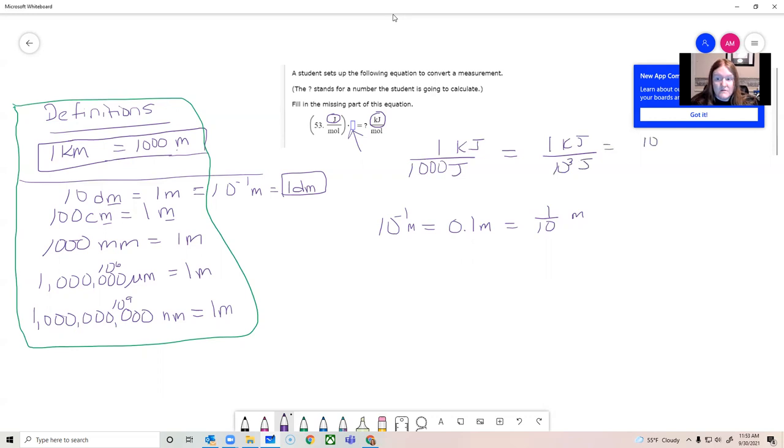You could also do what Alex does and write it as 10 to the negative three kilojoules per one joule. That's the same thing. Numerically, you have 10 to the three in the denominator. So if I wanted that to be in the numerator, I just make it 10 to the negative three. Okay. These are exponent rules, essentially. All three of these options when typed into Alex will give you the credit for the question. So you get to pick.